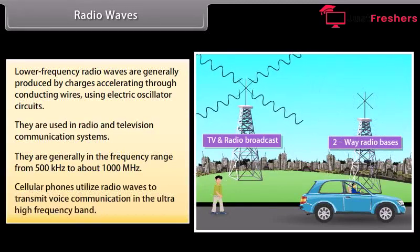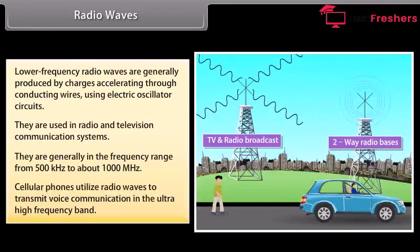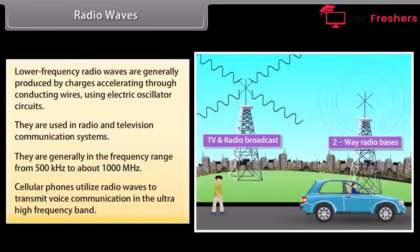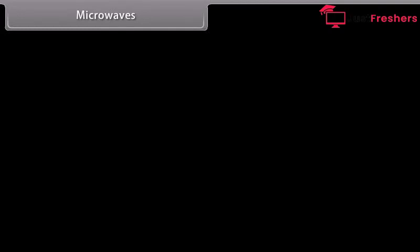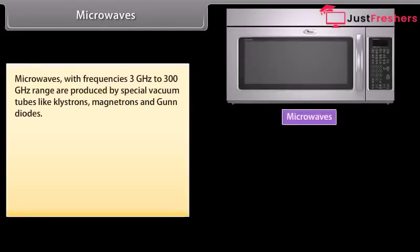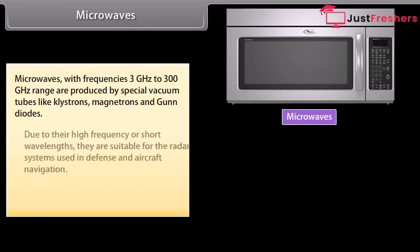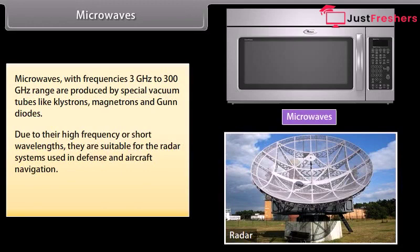Cellular phones utilize radio waves to transmit voice communication in the ultra-high frequency band. Microwaves, with frequencies from 3 GHz to 300 GHz, are produced by special vacuum tubes like Klystrons, Magnetrons, and Gunn Diodes. Due to their high frequency or short wavelengths, they are suitable for radar systems used in defense and aircraft navigation. Microwave ovens are a domestic application of microwaves.